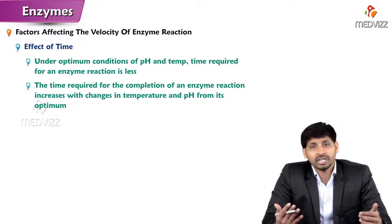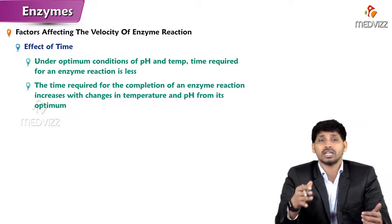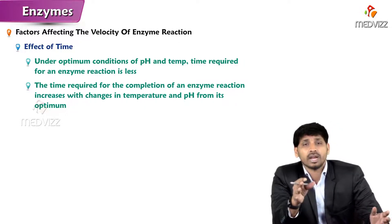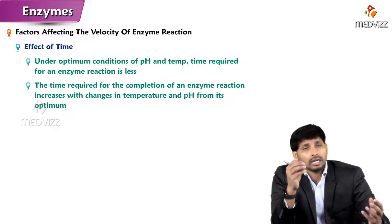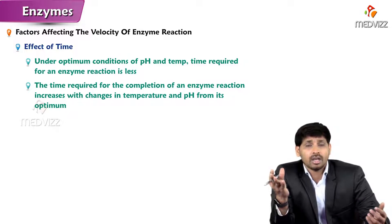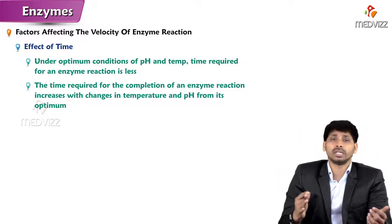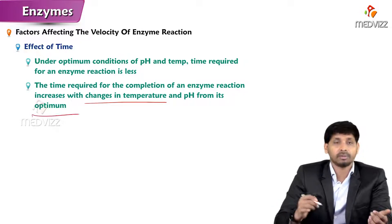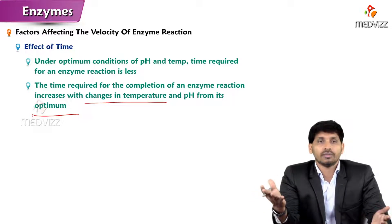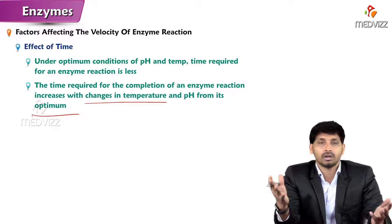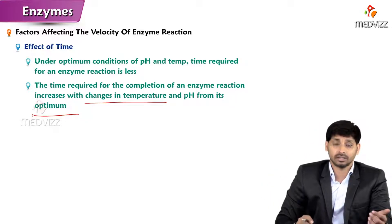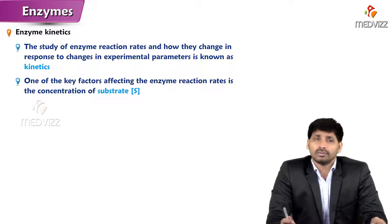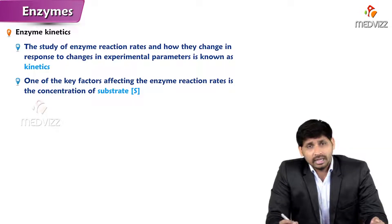Under optimum conditions of pH and temperature, the time required for an enzyme reaction is less. When pH and temperature are both at their optimum, the rate of reaction is fast and the time duration for completion of the reaction is also less. The time required increases with any change in temperature or pH from its optimum — above and below optimum are the two unfavorable conditions. That is all about the factors affecting the velocity of enzyme reaction. Thank you for listening.